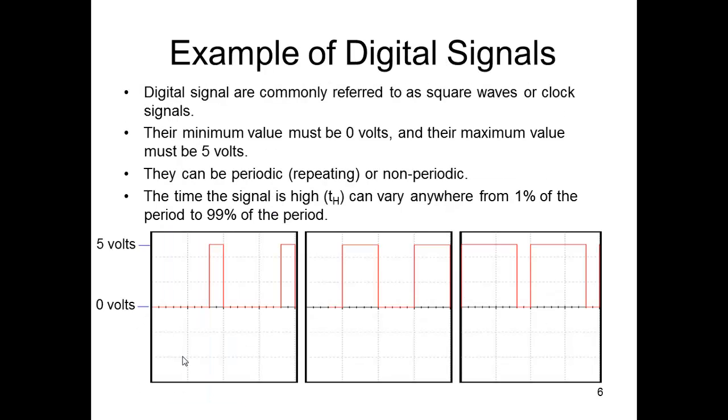So digital signals are usually called square waves. Sometimes they're called clock signals.